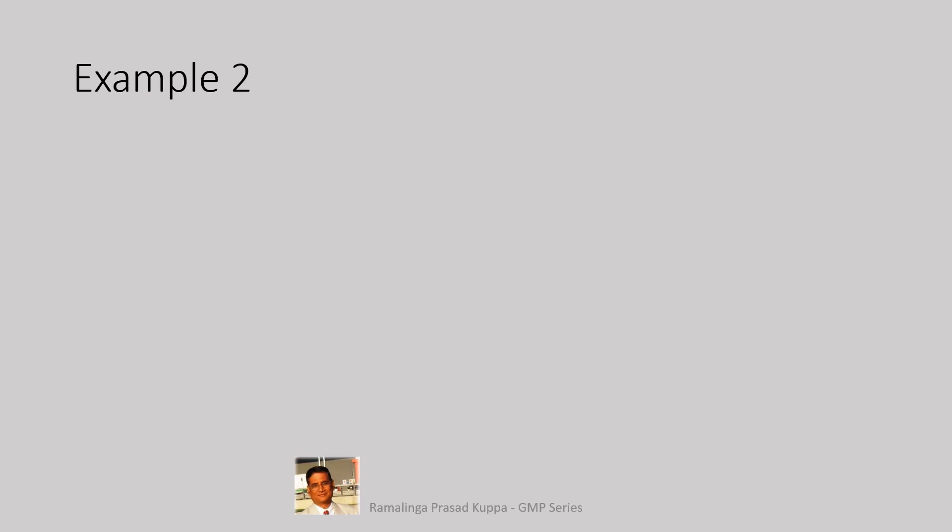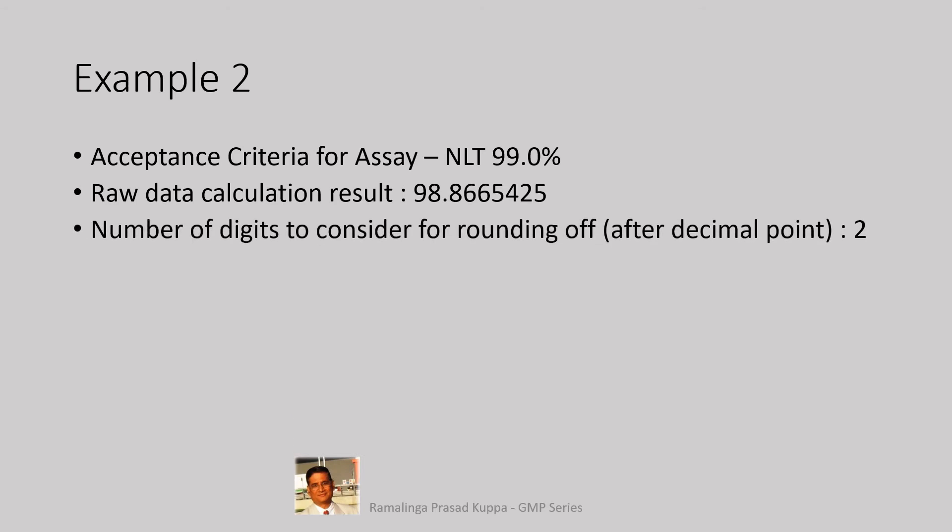In this example 2, the specification value for assay is not less than 99.0%. The specification is 1 digit after the decimal point. The raw data calculation result was 98.8665425. Since the specification has 1 digit, we have to consider 2 digits after the decimal point for rounding off.